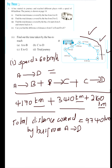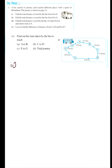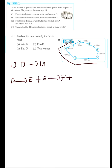Now let's see the second question: find the total distance covered by the bus from D to G. D to G means the total distance covered from D to E, plus E to F, plus F to G.